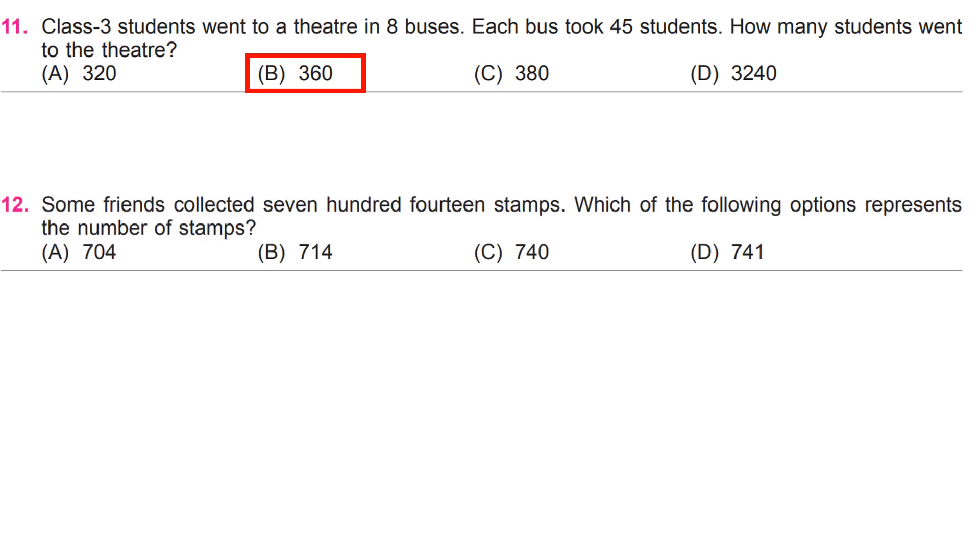Some friends collected 714 stamps. Which of the following options represents the number of stamps? B, 714.